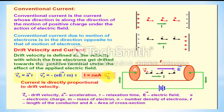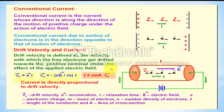Since velocity equals length by time, V_D equals L by T. The expression becomes N·e·A·L by T. A into L becomes volume, and multiplied by N gives the total number of electrons. Multiplying by e gives total charge, and dividing by T gives charge per unit time. So total charge by total time equals current. The relation is I equals N·e·A·V_D.